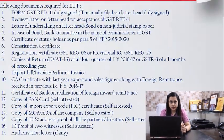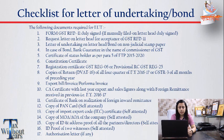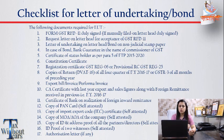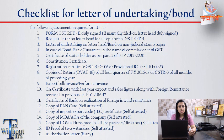Here is a checklist for the same. First, a request letter on the letterhead of the company for acceptance of the documents. Second, form GST RFD-11 on your letterhead if doing it manually. Third, the LUT or bond as specified in Rule 96A of CGST Rules. Then the bank guarantee in case of bond. Then the certificate of status holder if applicable, the constitution certificate, GST registration certificate, and copies of return DVAT-16 for all four quarters of financial year 2016-17, export bill invoice or pro forma invoice.